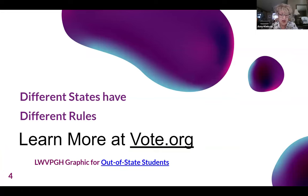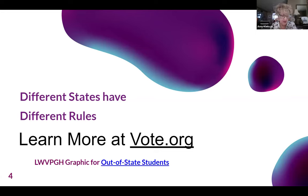Different states have different rules. We like vote.org where people can find their state-specific information. This graphic was made for out-of-state college students to find information about voting.